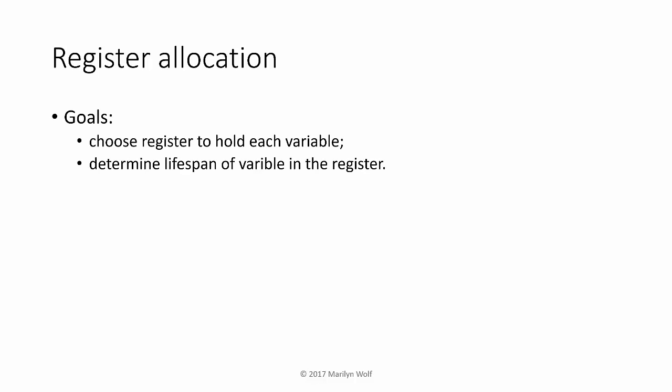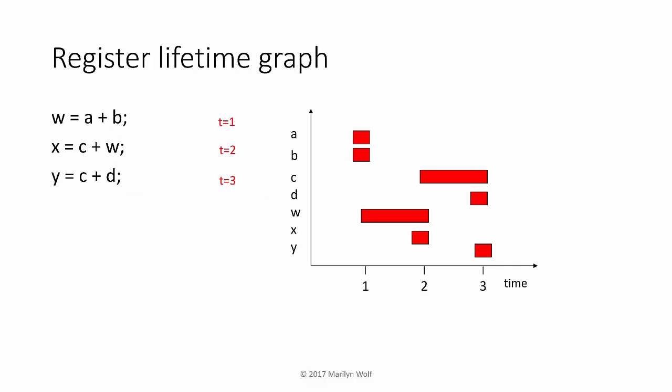Efficient use of registers is important for generating good code. We can use strong algorithms to determine how to map variables into registers. We want to choose a register to hold each variable and determine the lifespan of each variable in the register; once we're done with a variable we can reuse the register for a different variable. Consider a single basic block with three statements and several variables. A lifetime graph describes how those variables are used: the x-axis is time, the y-axis is the different variables, and the graph shows when each variable is active. If two variables are not active at the same time, we can assign them to the same register because they won't conflict.